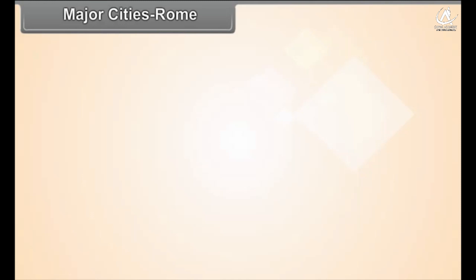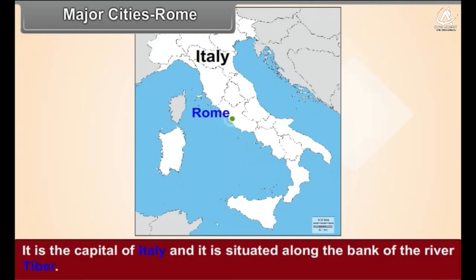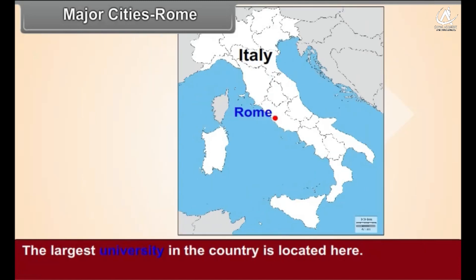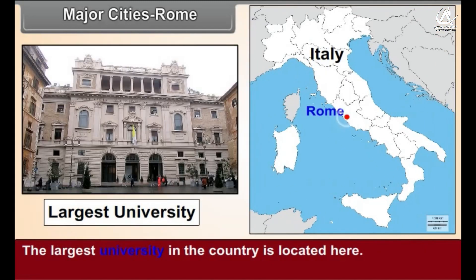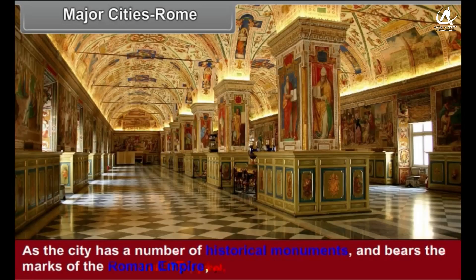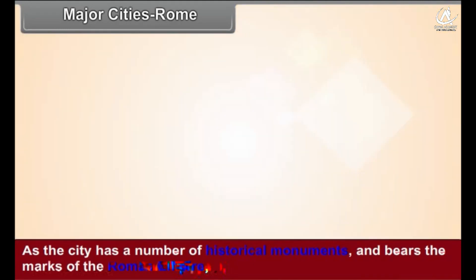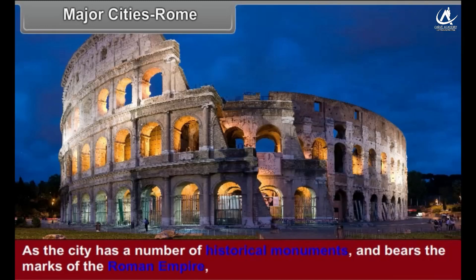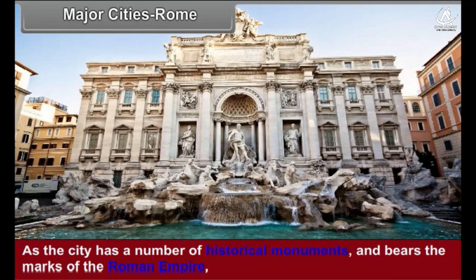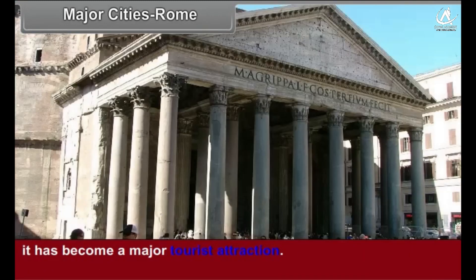Major Cities – Rome: Rome is the capital of Italy, situated along the bank of the River Tiber. The largest university in the country is located here. As the city has a number of historical monuments and bears the legacy of the Roman Empire, it has become a major tourist attraction.